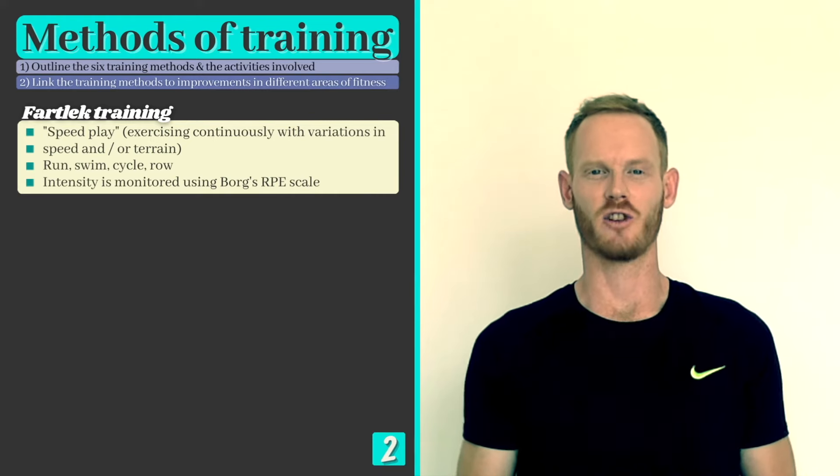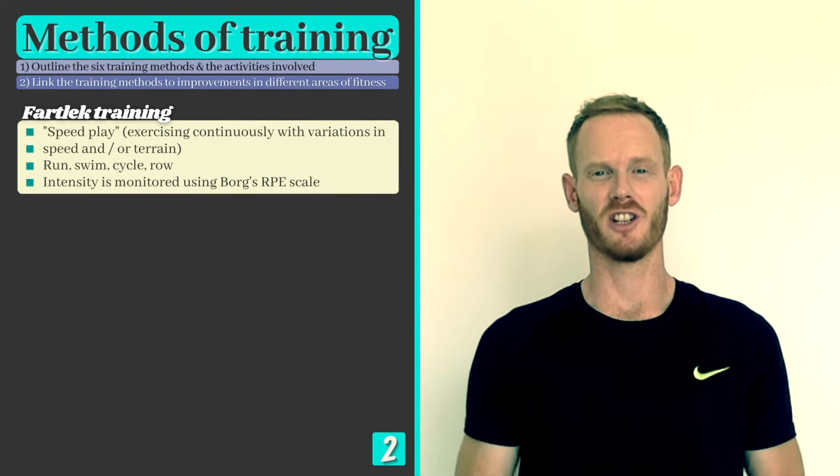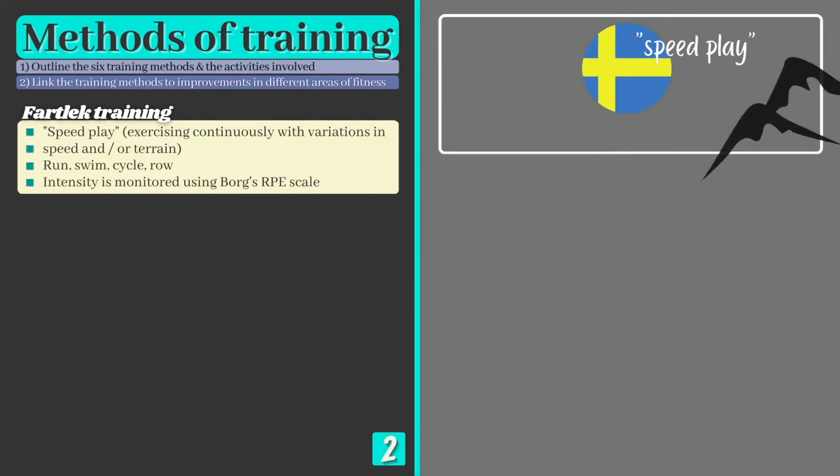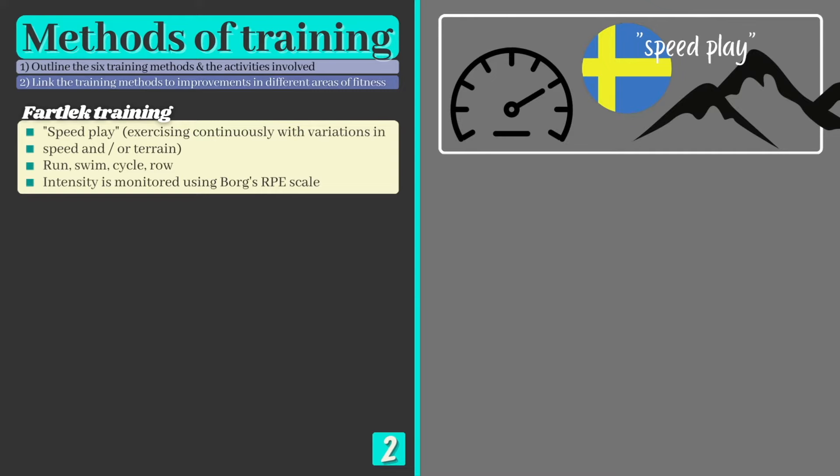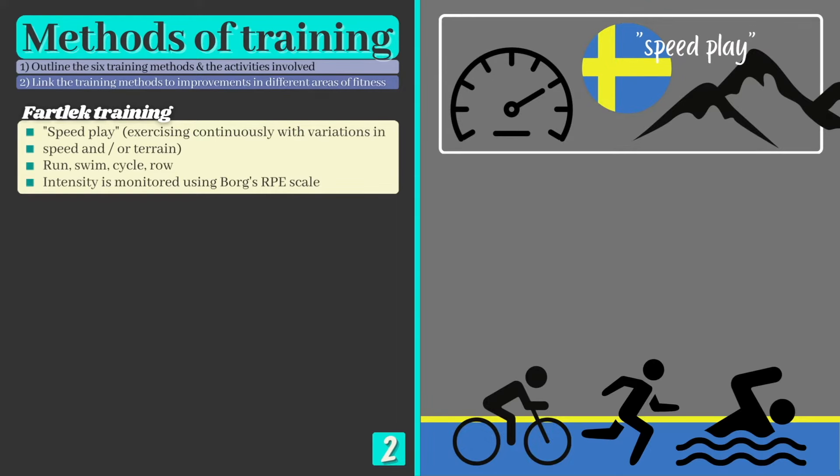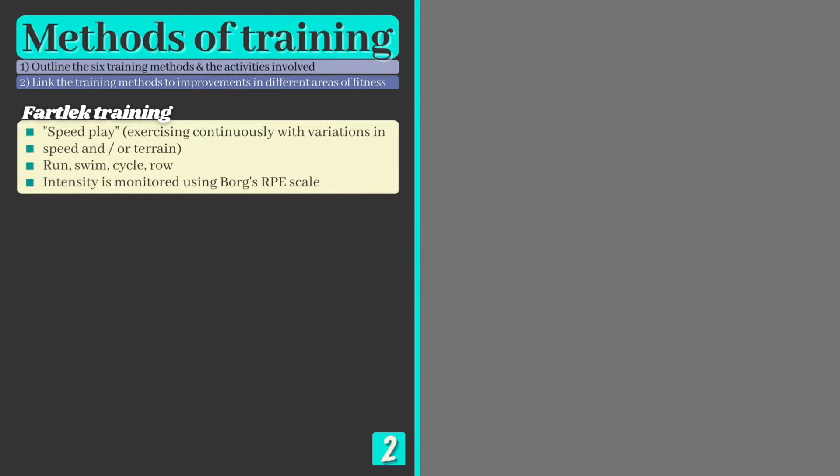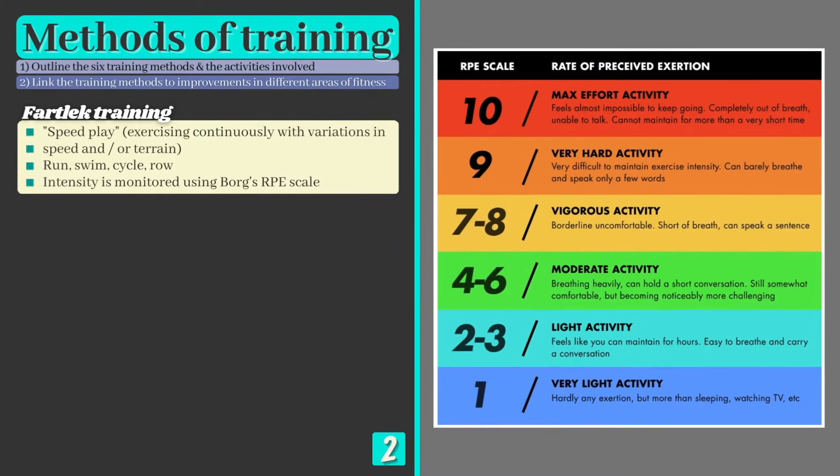Training method 2: fartlek training. Fartlek is another form of continuous training as no rest periods are taken. Fartlek is the Swedish word for speed play and is therefore characterized by variations in pace and/or terrain. Common methods include cycling, rowing, and running, and a typical fartlek circuit could include sections for sprinting, jogging, hill climbs, and ascents. Intensity is monitored using Borg's RPE scale, which allows you to make an estimate of your current work rate.